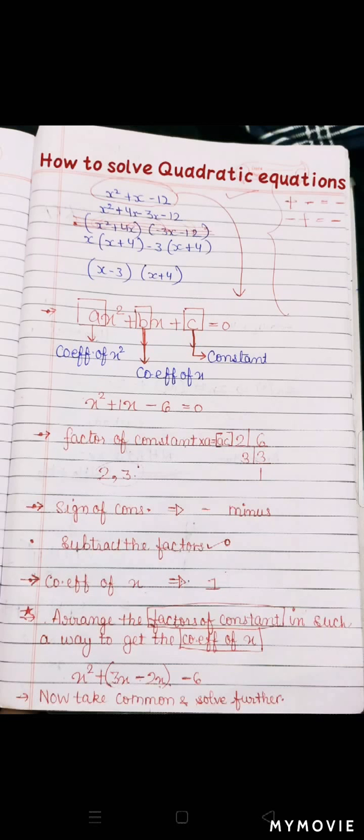Agar kabhi aapko x² ka koi coefficient ho — like maan lo yahan aapke paas 2x² ho — toh hum kya karte hain: constant ko 'a' se multiply kar dete hain. 'A' kya hai? Jo coefficient of x² hai. Dekhiye, isko short form aur tricky banane ke liye humne 'ac' likh diya hai. Lekin hamari is example mein x² ka koi coefficient nahin hai, toh hum 6 ko kisi se multiply nahin karenge aur sidhe 6 ke factors kar denge. Ab humein factors jo mile woh 2 aur 3 hain.